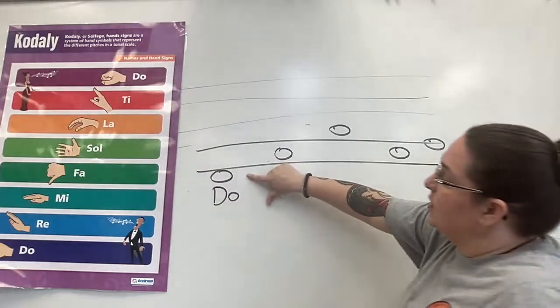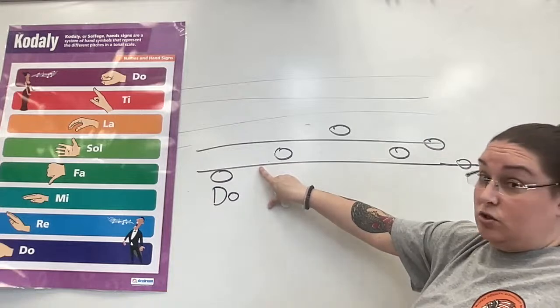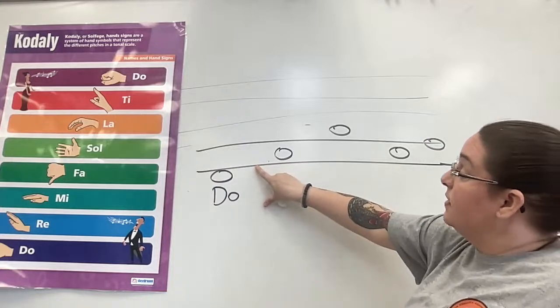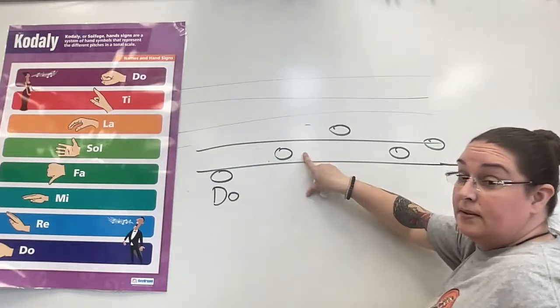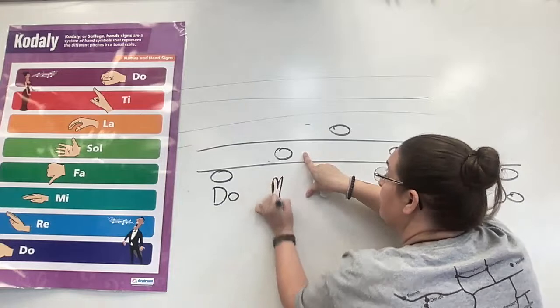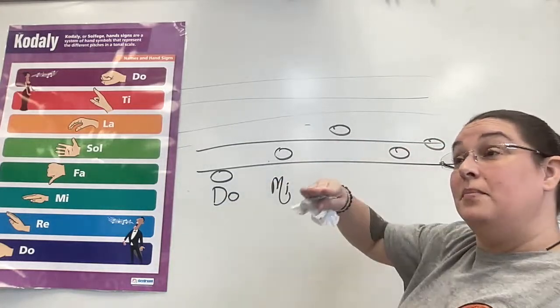Okay. So now if this is Do, that means the line is Re, but there's no note there. So we're not going to be singing Re. Instead, the next note above that goes to the space. And this one is what? This is Mi. So we don't sing Re, but we can hear it. So Do, Mi, Do, Mi, Do.